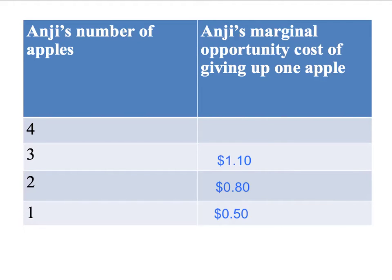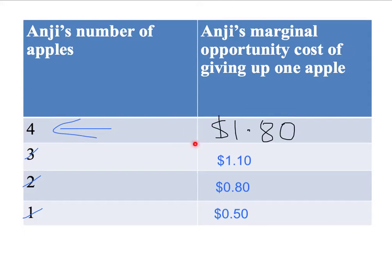Finally, Anji's down to her last apple — she's already given up three apples. We're now going to ask her: given that you've already given up three apples, what is the minimum amount of compensation you would need to just be willing to give up the last, fourth apple? Let's imagine her answer is $1.80. She'd need at least $1.80 compensation to be willing to give up that fourth apple. So $1.80 is her marginal opportunity cost of her last apple, and as expected, that's higher than all of her previous marginal opportunity costs.